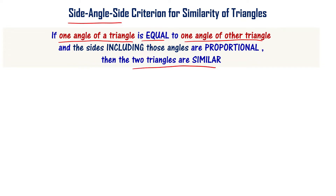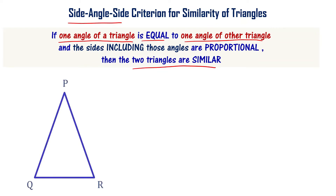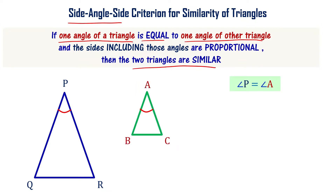Let us consider triangle PQR. Let me now draw a triangle ABC which has one of the angles equal. Angle P is equal to angle A. We now have one angle of one triangle equal to one angle of the other triangle. The sides including those angles — in this case sides including angle P and angle A — are proportional.